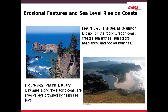Erosional features and sea level rises on coasts create such things as — on the left hand side — erosions on the Oregon coast, which include sea arches (visible in the middle of the picture), also sea stacks, headlands and pocket beaches, and other things such as estuaries. Here's another example of an estuary — a photo of the Pacific estuary.